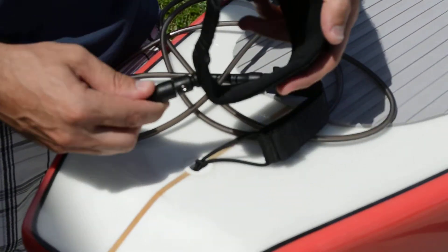The Wet Life Leash has pivot points at both ends, back here and at your ankle, so it will spin and not twist.